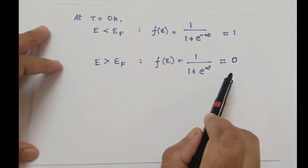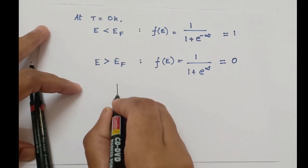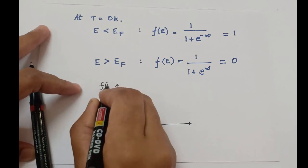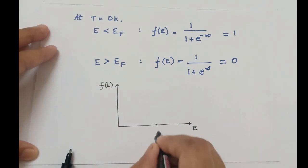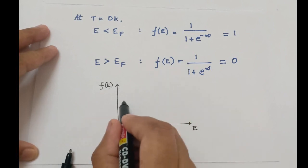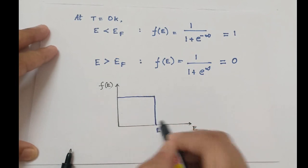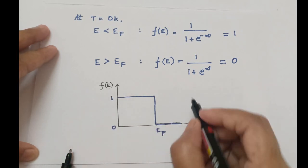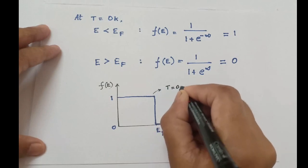So all energy levels greater than Fermi energy have a probability of occupancy equal to 0. To plot this: at the Fermi energy, the probability of occupation is 1 up until EF, and for all energy levels above the Fermi energy, the probability of occupation is 0. This is the graph at absolute zero, that is at 0 Kelvin.